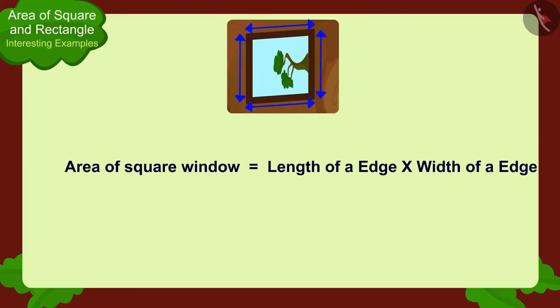In this way, the area of the window would be six times six, 36 square meters.